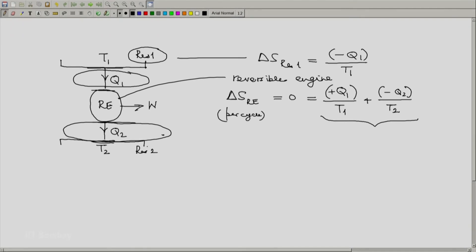So the temperature here is T2, heat absorbed is q2. So for this reservoir, delta S reservoir 2 will be heat absorbed by that reservoir which is plus q2 divided by T2.